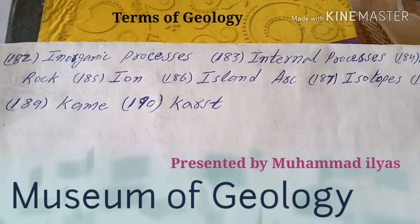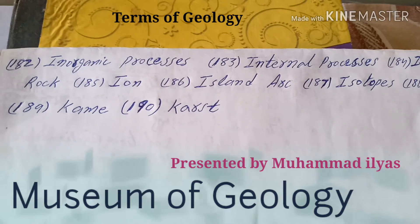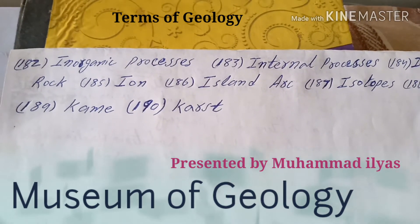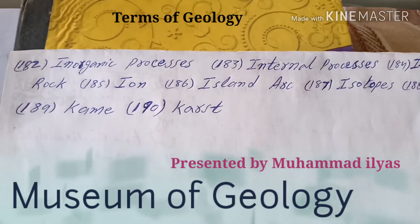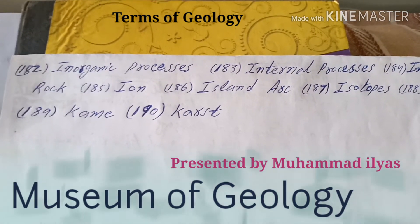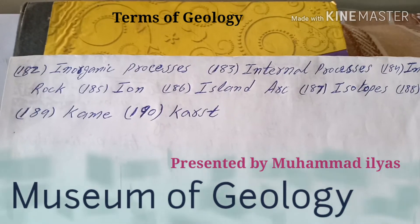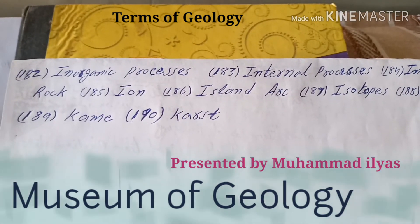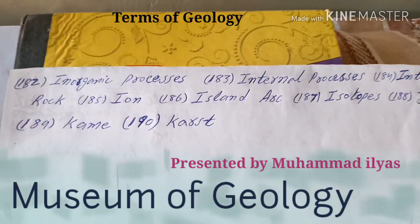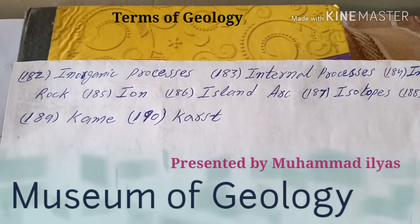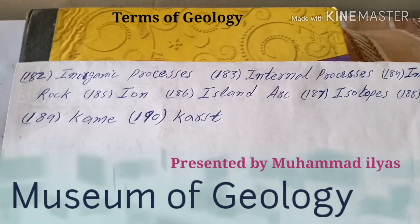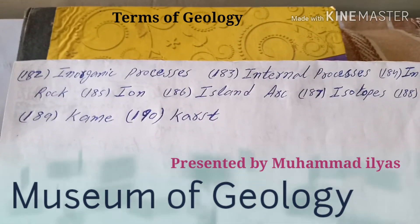On 189 there is kame. A steep-sided hill composed of sand and gravel originating when sediment collected in openings in stagnant glacial ice. It is called kame.